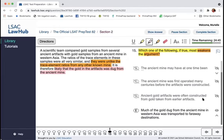E, much of the gold dug from the ancient mine in Western Asia was transported to far away destinations. Yeah, so we don't actually know where these ancient artifacts showed up. So, and also the word much is kind of interesting here. So much of the gold was transported far away, but much doesn't mean all of it, certainly.